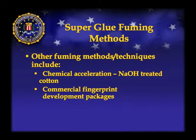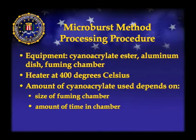You can also accelerate the process by placing sodium hydroxide on cotton — that creates a heat reaction and the glue will fume that way. There are also different commercial fingerprint packages designed to work without needing a heat source or electricity. For the microburst processing procedure, you'll have superglue, small aluminum tins, and some type of fuming chamber. If you try to glue something outside on a breezy day, you're going to see the fumes blowing everywhere — you need something that will contain those fumes, whether a chamber, a bag, or anything that traps the fumes so the item is exposed for the correct amount of time.